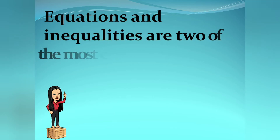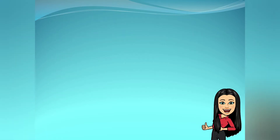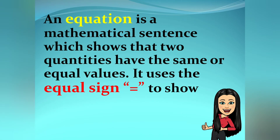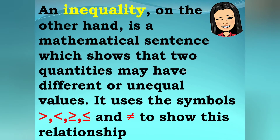Equations and inequalities are two of the most commonly used terms in mathematics. An equation is a mathematical sentence which shows that two quantities have the same or equal values; it uses the equal sign to show the relationship. On the other hand, an inequality is a mathematical sentence which shows that two quantities may have different or unequal values; it uses the symbols greater than, less than, greater than or equal to, less than or equal to, and not equal to show this relationship.